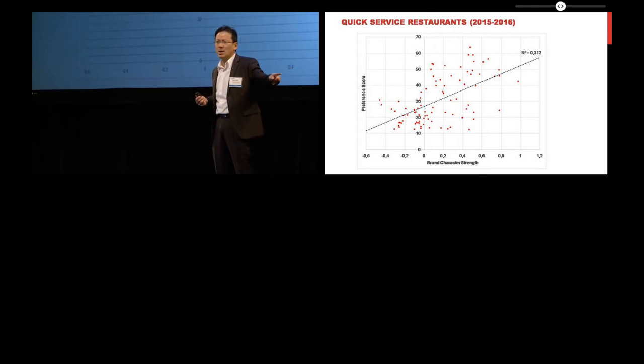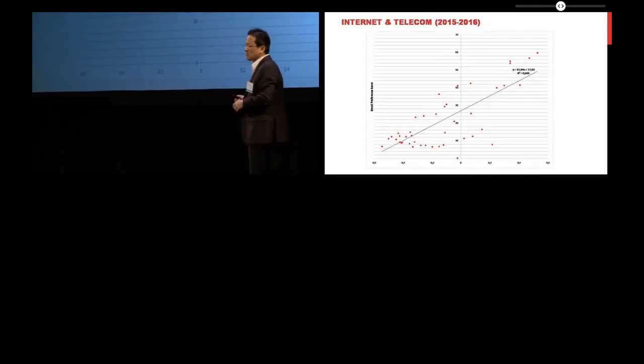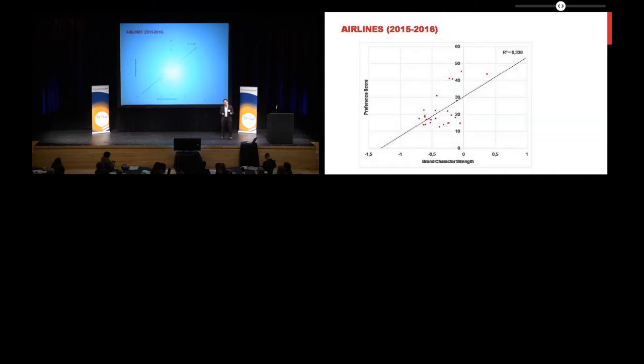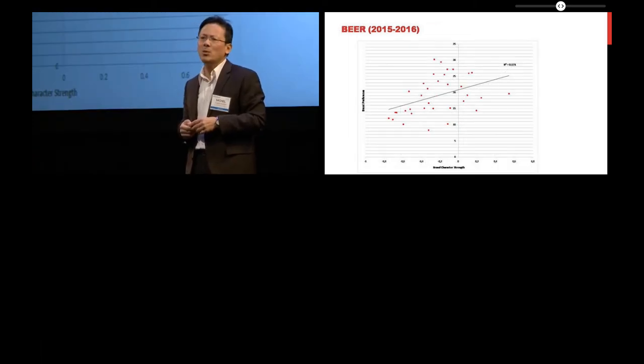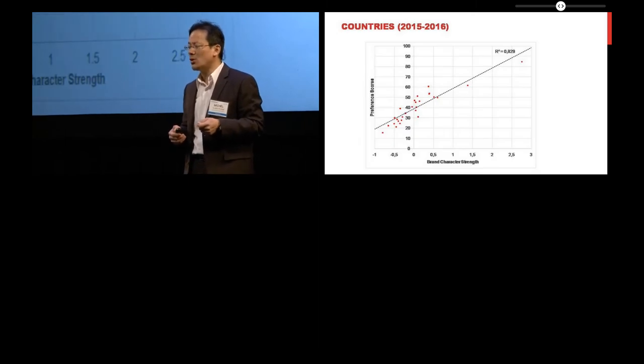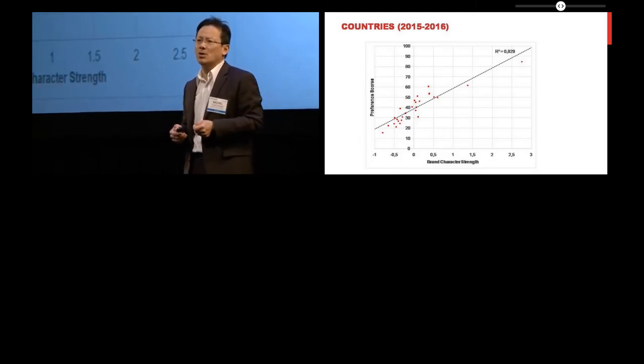If you look at the internet and telecom services, very strong correlation. This is one of the strongest we've seen in our data. If you look at airlines, very strong correlation. If you look at beer, it's a bit weaker, but still substantial correlation. If you look at countries, very, very strong correlation.